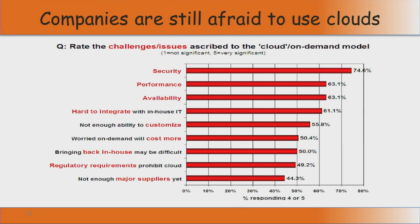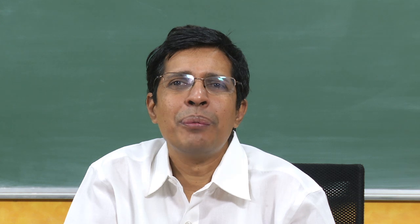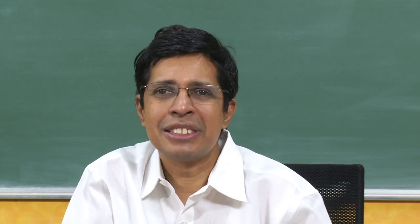Similarly, 63 percent cited performance, 63 percent cited availability, and 61 percent said it is hard to integrate with in-house IT. For example, if a regulator wants a change, an in-house team can do it next day because they have dedicated software development, but when completely outsourced you depend on the system integrator who has many customers and may take more time. More than 55.8 percent felt they were not able to customize properly.